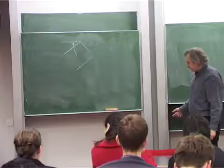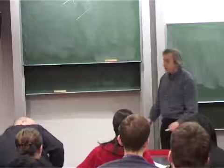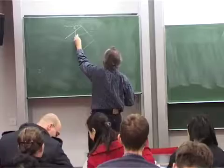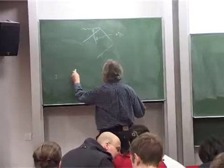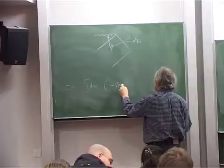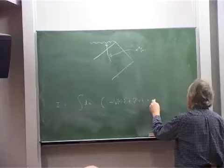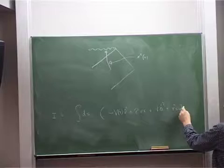What we had done was to get as far as having an action for this. The action was the integral ds into minus v of r times v-dot squared, plus 2 v-dot r-dot, plus r squared theta-dot squared, plus r squared sine squared theta phi-dot squared, where v was 1 minus 2m over r.